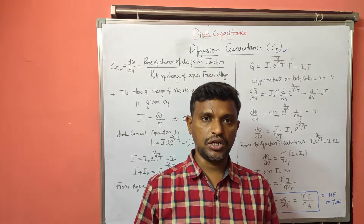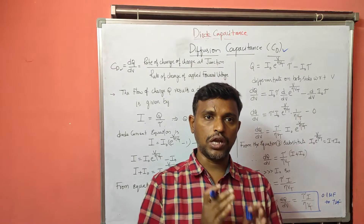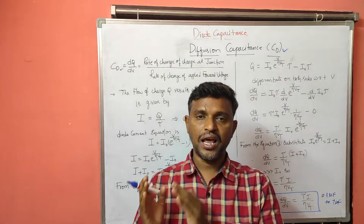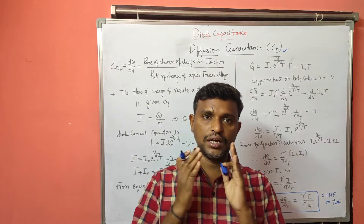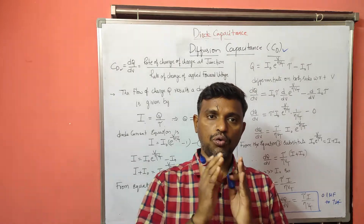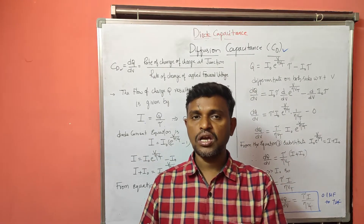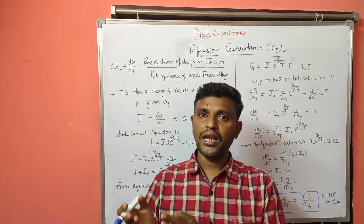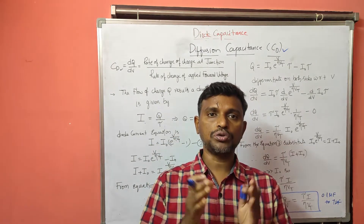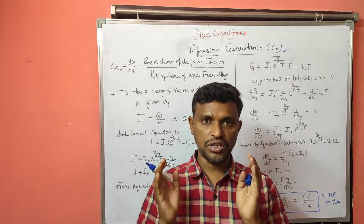In the forward bias condition, as we apply the forward bias voltage, the holes will move from P side to N side and the electrons will move from N side to P side. That means at the junction, the holes will be injected into the N region and the electrons will be injected into the P region. Due to that, there will be a change in the charge in the PN junction diode.